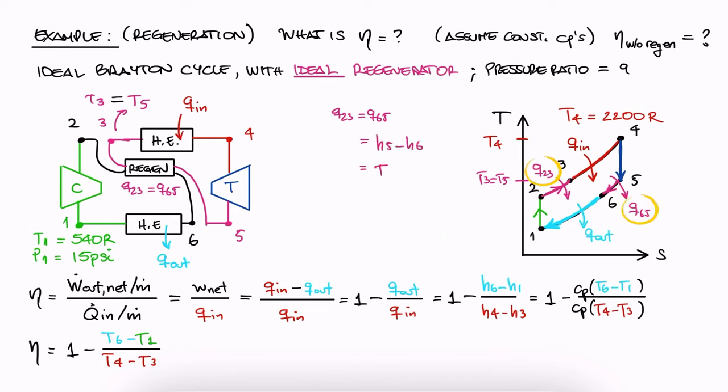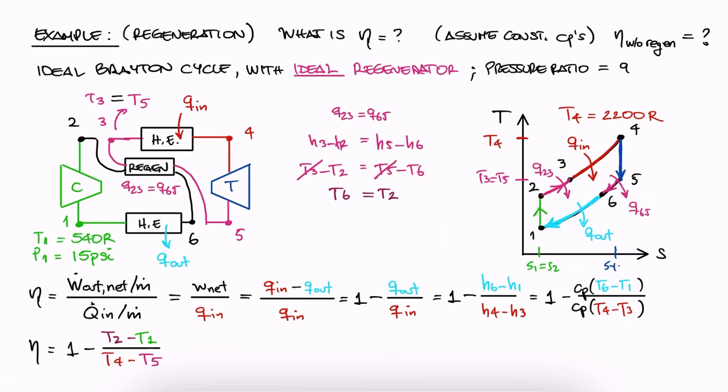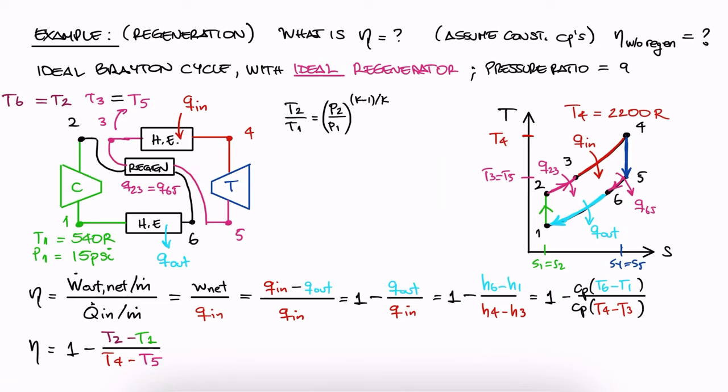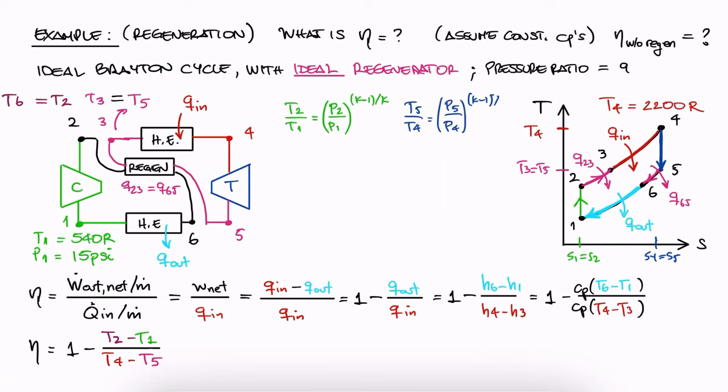Since the region heat is the same between 5 and 6 and 2 and 3, and T5 equals T3 for this ideal regenerator, it means that T6 is equal to T2. This is important because for our efficiency expression, we can substitute T6 for T2, and T3 for T5. We weren't given T2 and T5, but because we know that both the compressor and the turbine are part of an ideal Brayton cycle and therefore isentropic, we can use the isentropic relationships between temperatures, what we want to find, and pressures, what we were given, to solve for T2 and T5.